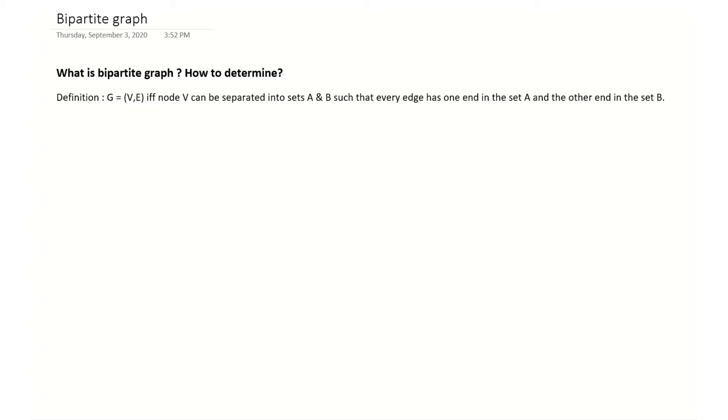Hello, let's see what is a bipartite graph and how to determine it. The definition is, if a graph has nodes V and edges E, it is a bipartite graph if and only if we can